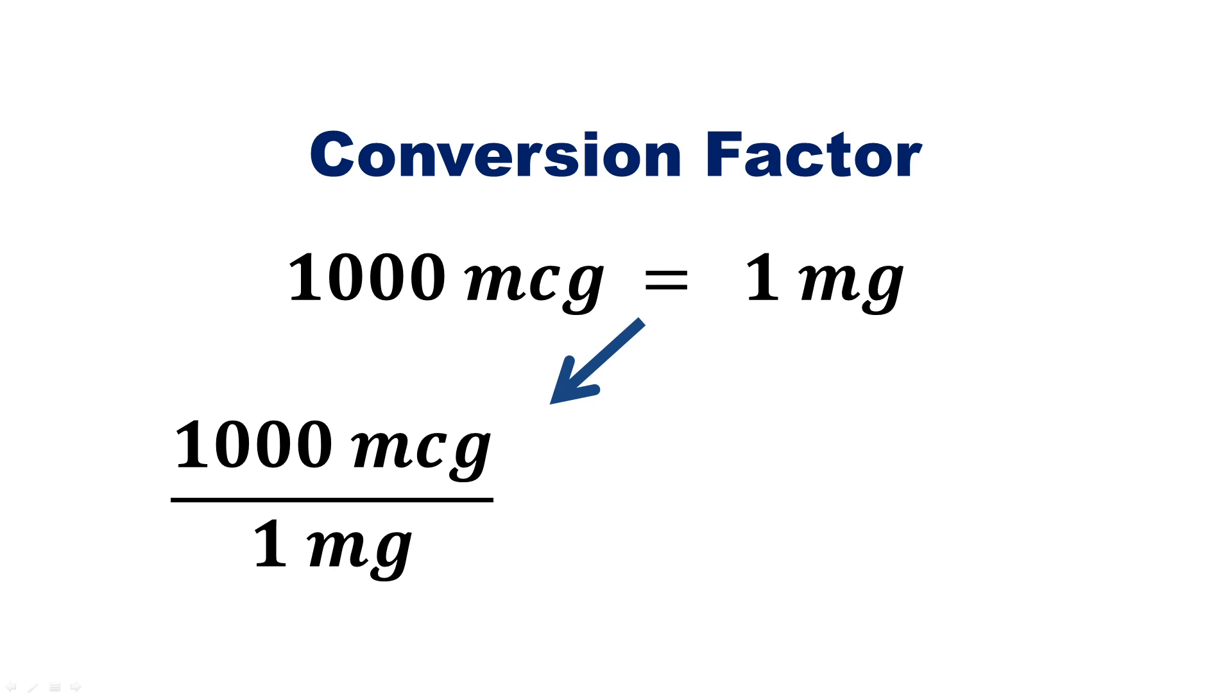Keep in mind that these two values are equal to each other and therefore I can flip this fraction into its reciprocal and still not change its value. The fraction is still equal to 1 and I can still multiply that into my equation without changing the overall value.